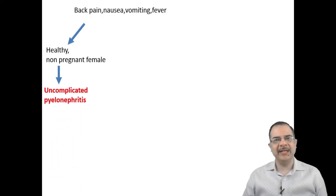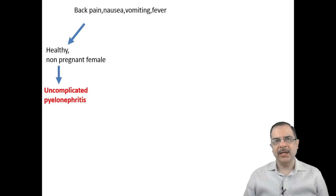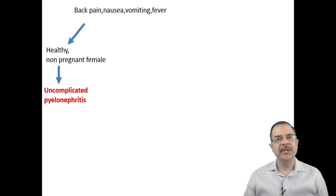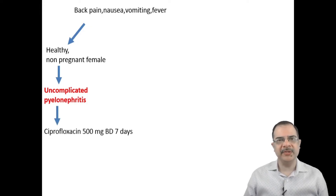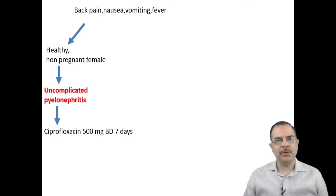Using the same definition — if pyelonephritis is present in a healthy non-pregnant female, it will be considered uncomplicated pyelonephritis. In any case of pyelonephritis, urine culture should be sent. Before the culture report is ready, we can start empirical antibiotics: ciprofloxacin 500 mg twice a day for 7 days, or levofloxacin 750 mg once daily for 7 days.